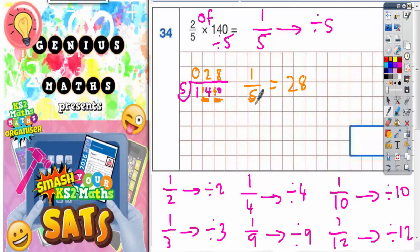but we want two-fifths. So two-fifths is going to be the same as twenty-eight times by two. Because one-fifth is twenty-eight, so two-fifths is going to be double it, two lots of this. So if we work out twenty-eight times two, we'll have our answer.